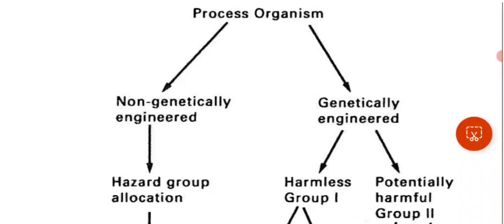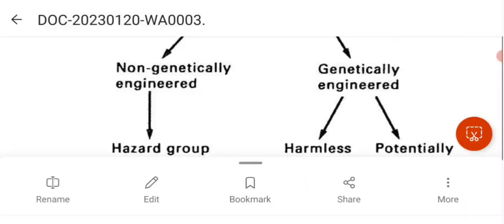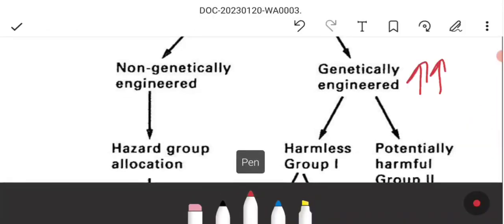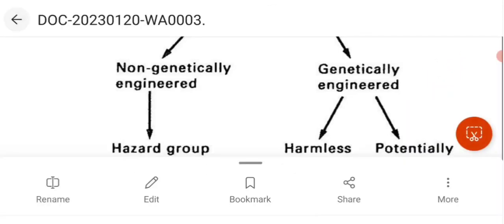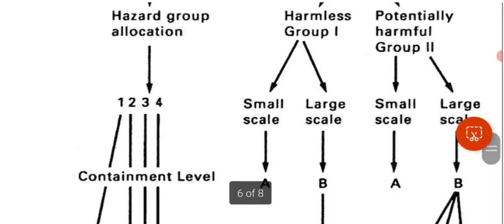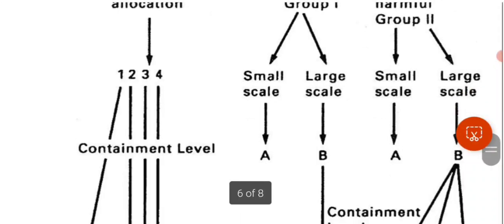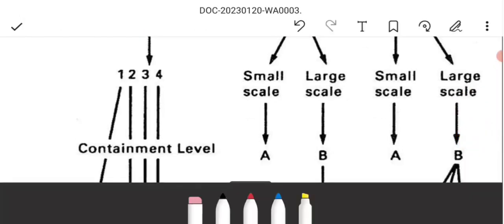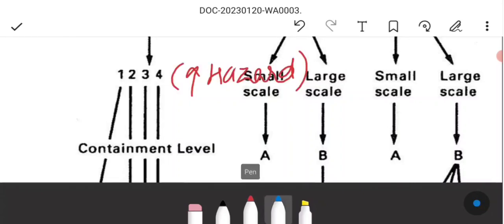The first part of the flowchart distinguishes between genetically engineered and non-genetically engineered microbes regarding regulation and containment. The containment level for genetically engineered organisms is higher. Organisms are divided into hazard groups 1, 2, 3, and 4 based on increasing hazard level, with group 4 being the most dangerous.